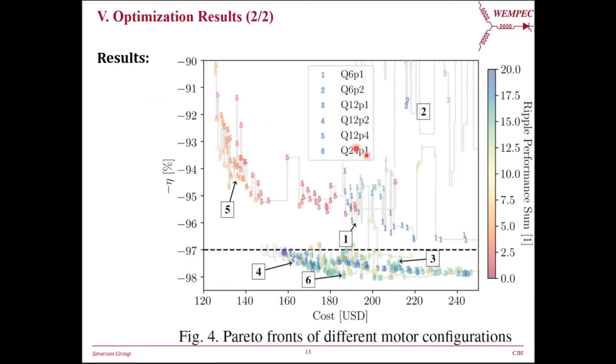This figure presents optimization results of all six slot pole combinations. For each combination, over 4,000 individuals are evaluated, but only the individuals at Pareto front are marked in this figure based on the three calculated objective values. The x-axis is cost, y-axis is negative efficiency, while the color of the scatter points indicates ripple performance sum. From this figure, we realize that marker 6 and marker 5 are particularly interesting to look at. The marker 5 or the Q12P4 design has very low cost and very low ripple performance sum, while the marker 6 or the Q24P1 design has the highest efficiency, which is most likely due to the low operating frequency. We will select one design for each slot pole combinations for further analysis.